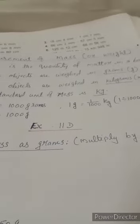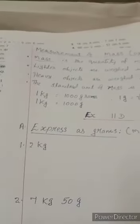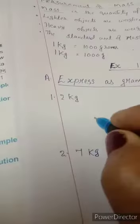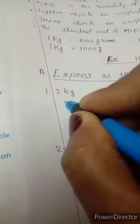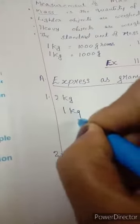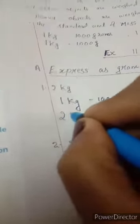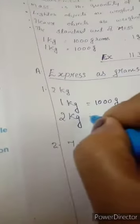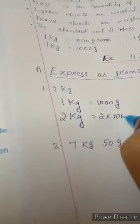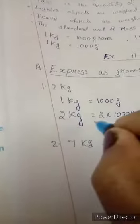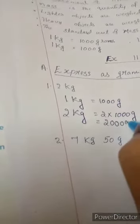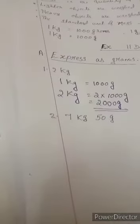Now we will start exercise 11d. Express as grams. To convert kilograms into grams, we will multiply kilogram by 1000. First example, 2 kg. You will write first 1 kg is equal to 1000 grams. Now 2 kg is equal to 2 into 1000. 2 into 1000 is equal to 2000 grams. Underline it.